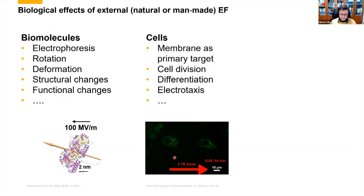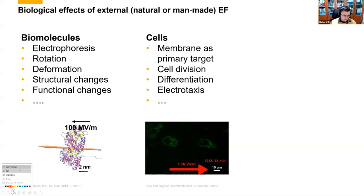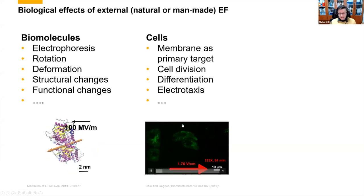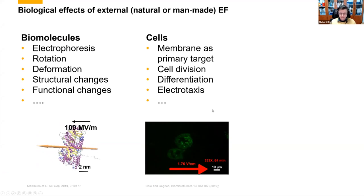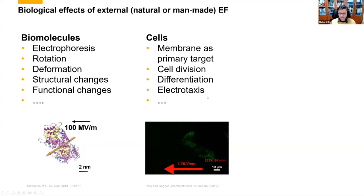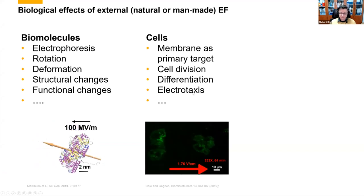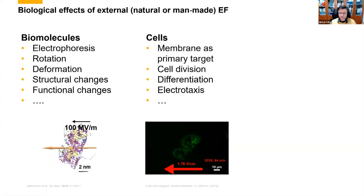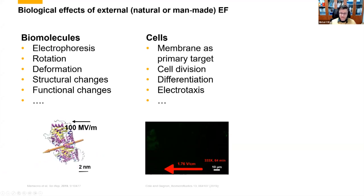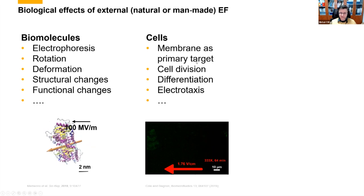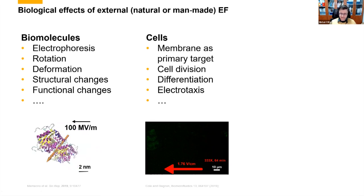At the cell level, if cells are exposed to an electric field, they manifest so-called electrotaxis or galvanotaxis — you can see fluorescent images of cells moving in the electric field direction. There are many other effects on cells, including cell division and differentiation. At lower frequencies or static fields, it is mostly the membrane that is the primary target. However, the higher the frequency of the electric field, the more structures inside the cell are affected, including intracellular membranous structures.